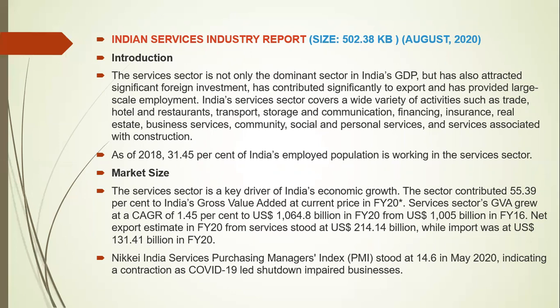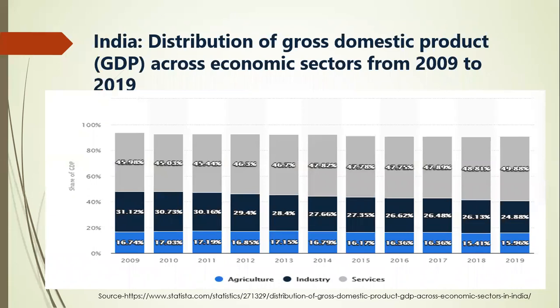India's services exports are especially strong in IT, tourism, and the health sector. India's services Purchasing Managers' Index (PMI) stood at 14.6 in May 2020, indicating contraction due to COVID-19-led shutdowns. Looking at GDP contribution data, the share of the service sector in GDP has been increasing compared to agriculture and industry. The contribution has risen significantly, especially after the liberalization, privatization, and globalization policies of 1991-92.